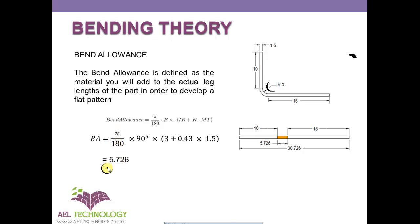You will get bend allowance as 5.726 mm. That means when we unfold this particular radius, we will get the value as 5.726. This is where we use K factor, and now you understand what is the value of K factor.